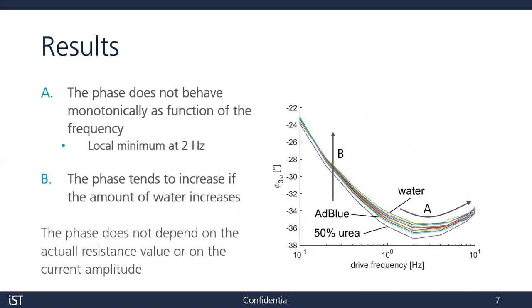We can also look at the phase — the lag between temperature and heat flux — as a function of the driving frequency. Two observations can be made. First, the phase does not behave monotonically as a function of drive frequency; one sees a local minimum at around 0.2 Hz. Second, the phase also shows a fluid dependency; however, this dependency is not well visible at 0.1 Hz, and a clear trend is visible from 0.2 Hz to around 5 Hz.